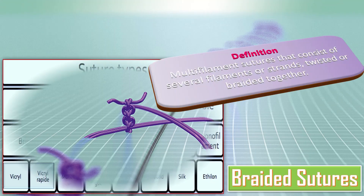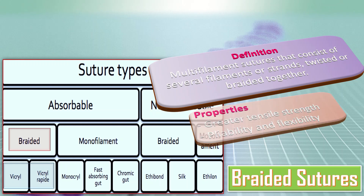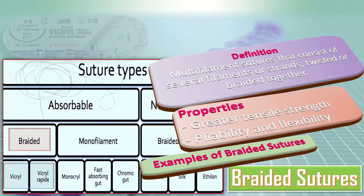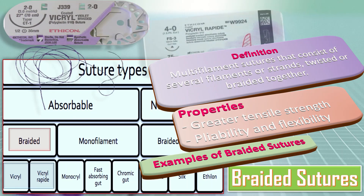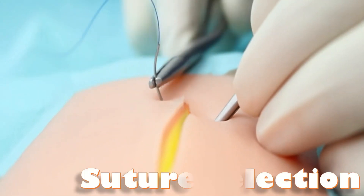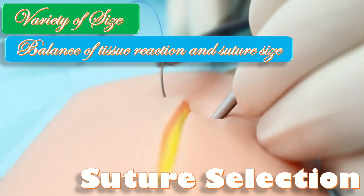Braided sutures are multi-filament sutures consisting of several filaments or strands twisted or braided together. Their properties include greater tensile strength, pliability, and flexibility. Examples include Vicryl and Vicryl Rapid.